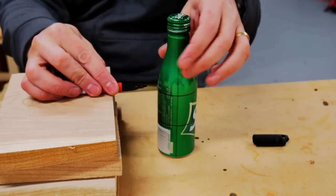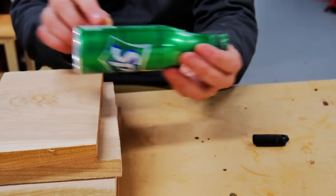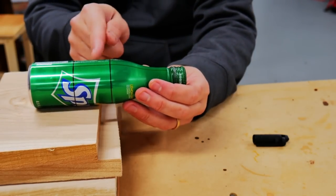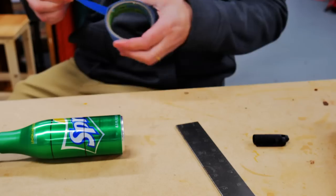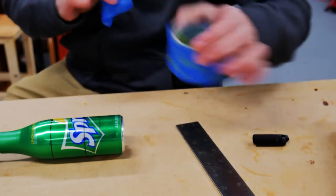Alright, so get yourself a permanent marker and make two lines on the bottle. You want to basically use the bottom line to determine how tall the stove will be and then the top will be marked based on that.